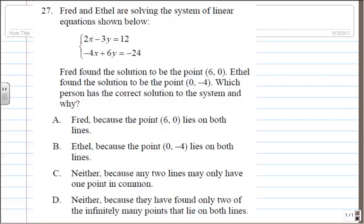I got 2x and negative 4x. I got negative 3y and positive 6y. Let's go with the x. Let's try to eliminate x. If I multiply the first equation by 2, I'm going to get 4x, and if I add the two expressions, the x will cancel out.